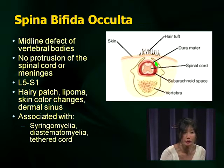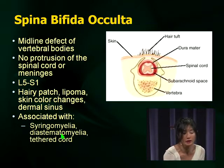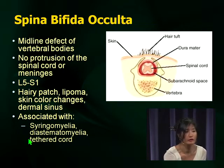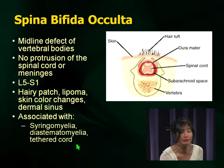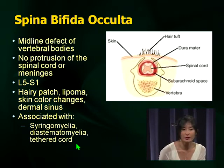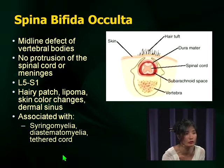Spina bifida occulta can be associated with syringomyelia — a syrinx is basically enlargement of the central canal of the spinal cord in a pathologic fashion. Another association is diastematomyelia — a splitting of the spinal cord, or double spinal cord. Most importantly for examinations, tethered cord is probably the most common associated finding with spina bifida occulta, and that's the one you really want to remember.